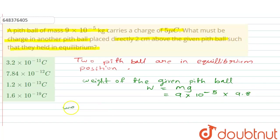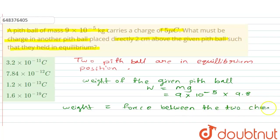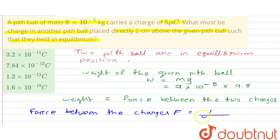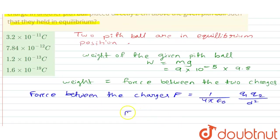This weight will be equal to the force between the two charges present on the pith balls. The force between two charges is given by F = (1/4πε₀) × (q1 × q2) / d², where 1/4πε₀ equals 9×10⁹.